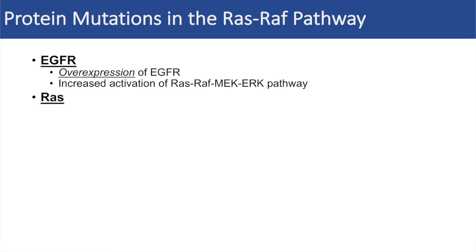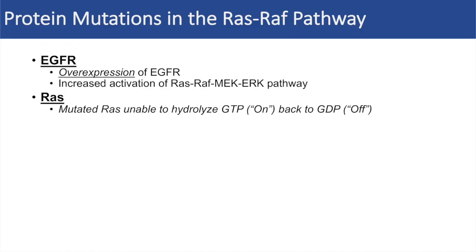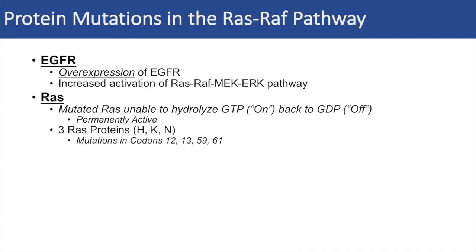With the RAS protein, it is inactivated when it is GDP-loaded, but it is activated when it is loaded with GTP. When RAS has been mutated so that it is unable to hydrolyze GTP back to GDP, this leads to permanent activation of the RAS protein. There are three RAS proteins — HRAS, KRAS, and NRAS — and when there are mutations in codons 12, 13, 59, or 61 in any of these three RAS proteins, it can lead to cancer.